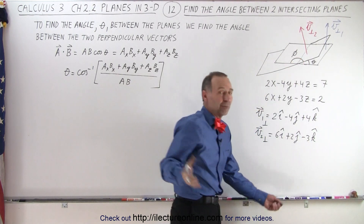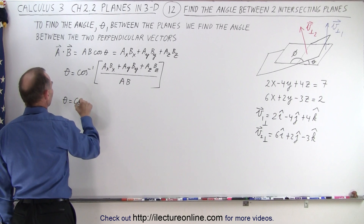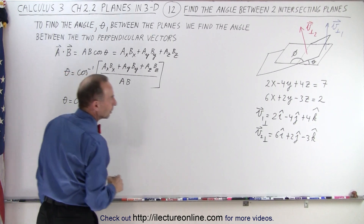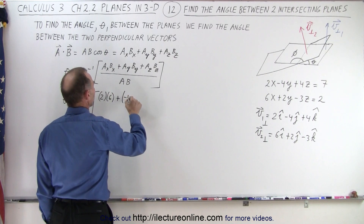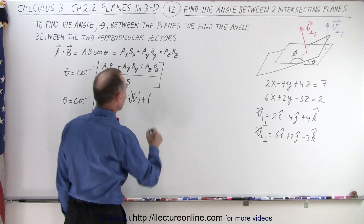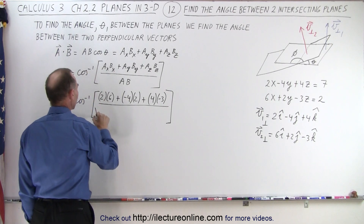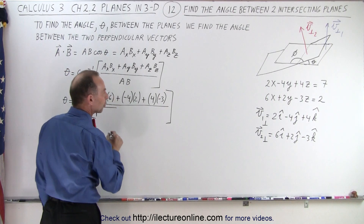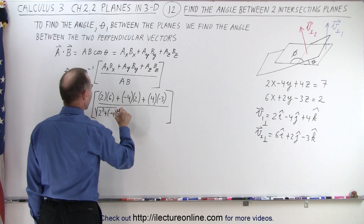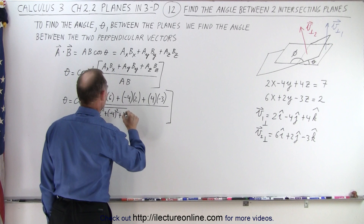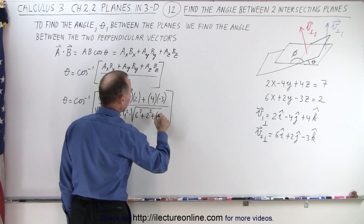Now we're going to plug that into our equation. Theta is going to be equal to the inverse cosine of the X components multiplied together — 2 times 6 — plus the Y components, negative 4 and 2, plus the Z components, 4 and negative 3. And we divide by the magnitudes: the square root of 2 squared plus negative 4 squared plus 4 squared, times the square root of 6 squared plus 2 squared plus negative 3 squared.